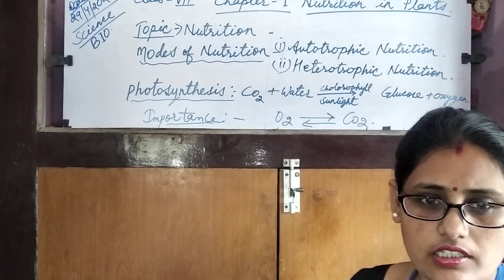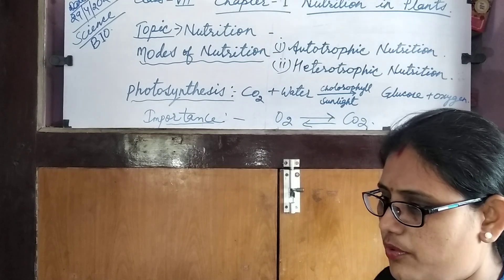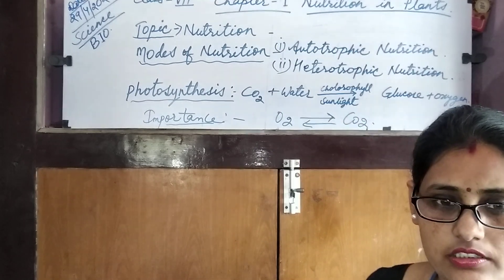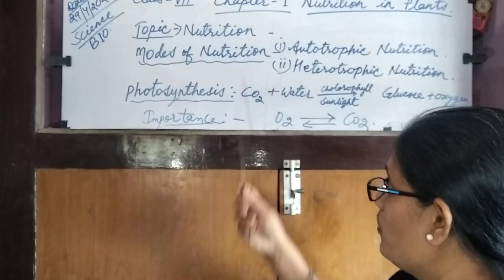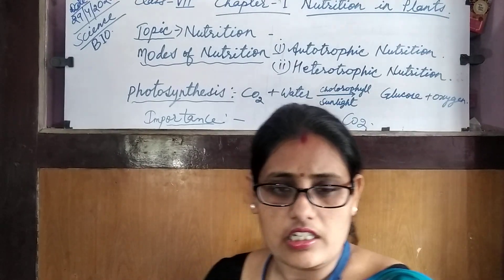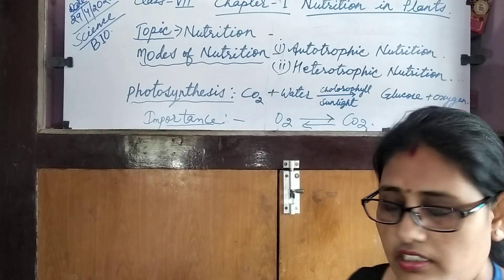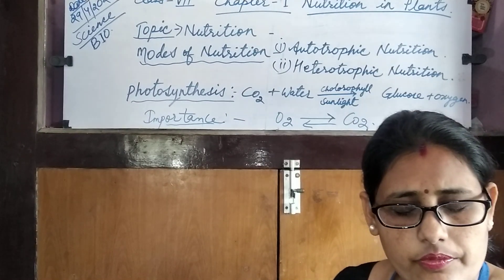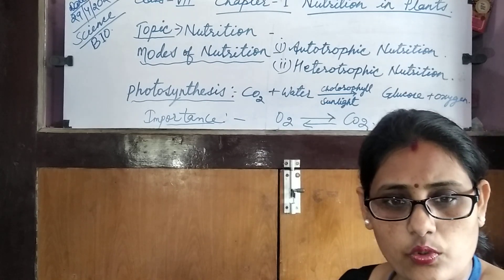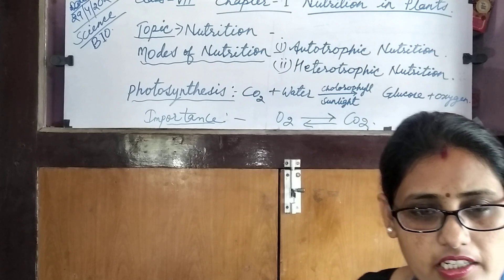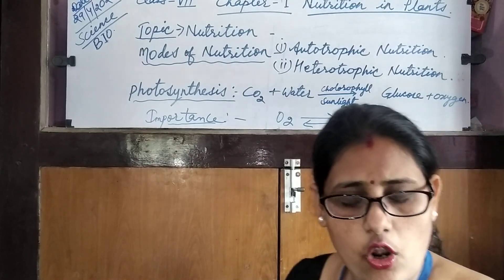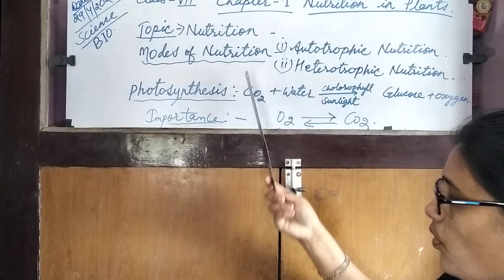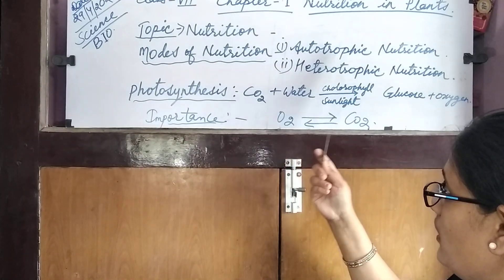We eat various types of nutrients in food. These nutrients include carbohydrates, proteins, vitamins, minerals, roughage, water, etc., all helping in the proper growth of our body. Nutrition — in Hindi also known as 'poshan' — means the process of taking in food and its proper utilization by the whole body.